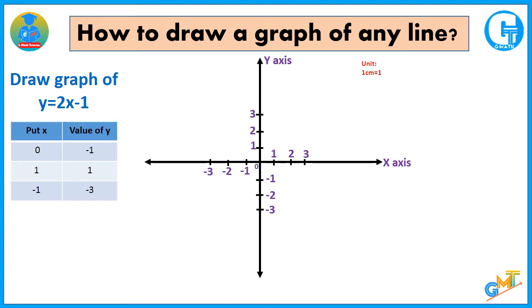Put x equals 0, we get y is minus 1. x is 1, y is 1. x is minus 1, y is minus 3. So put one by one: as x is 0, y is minus 1.